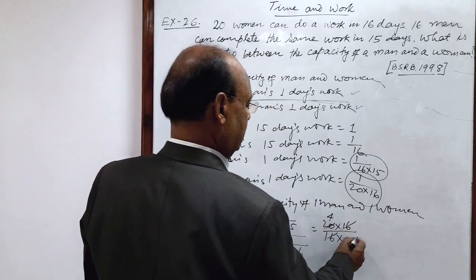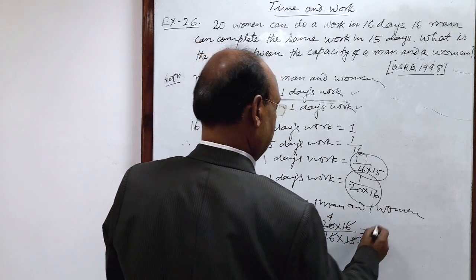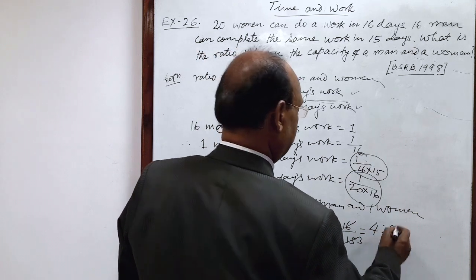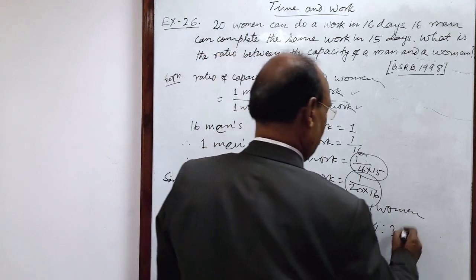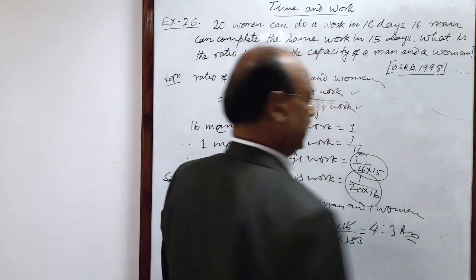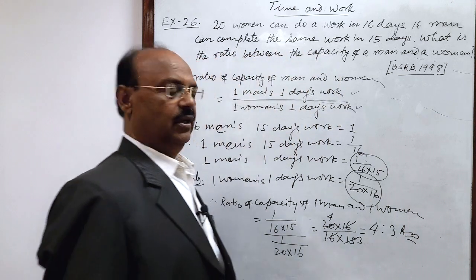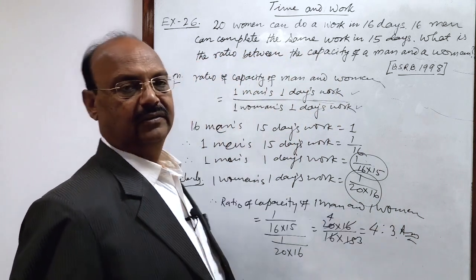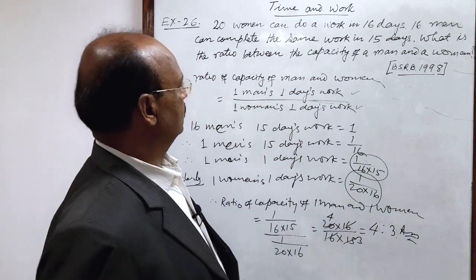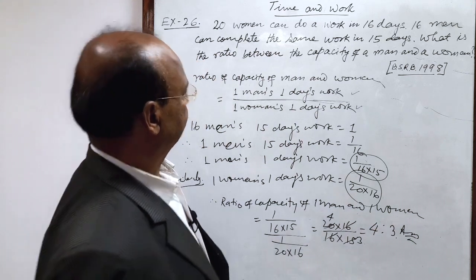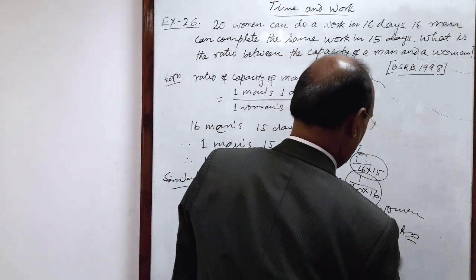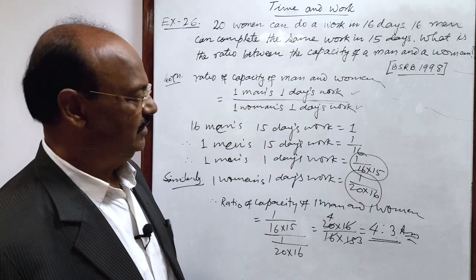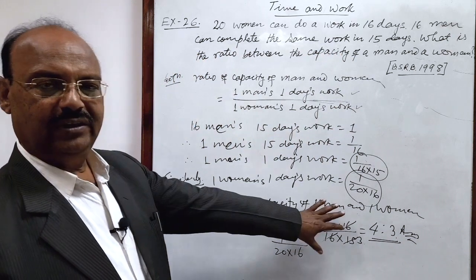5 times 4 is equal to 20, and 5 times 3 is equal to 15. So this simplifies to 4 is to 3. This is the ratio of the capacity of 1 man to 1 woman. So the answer is 4 is to 3. Very simple.